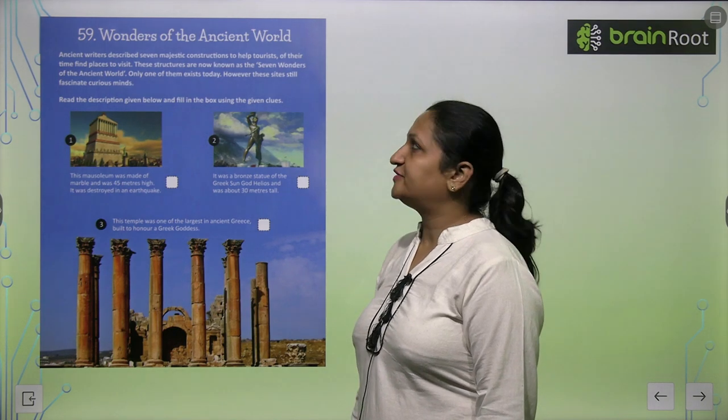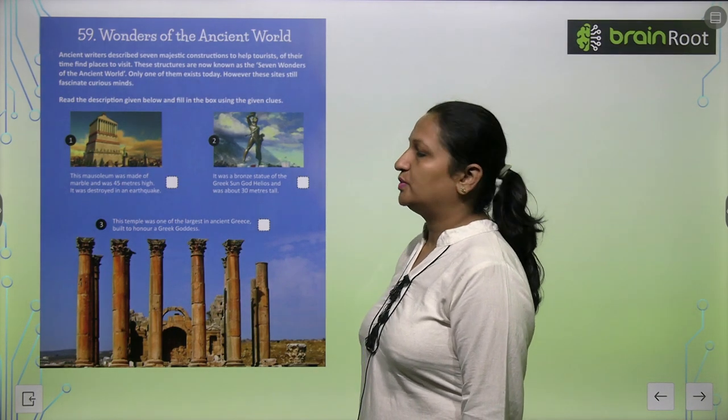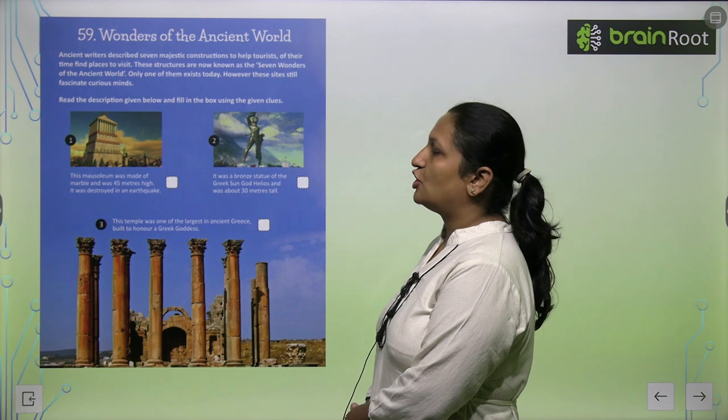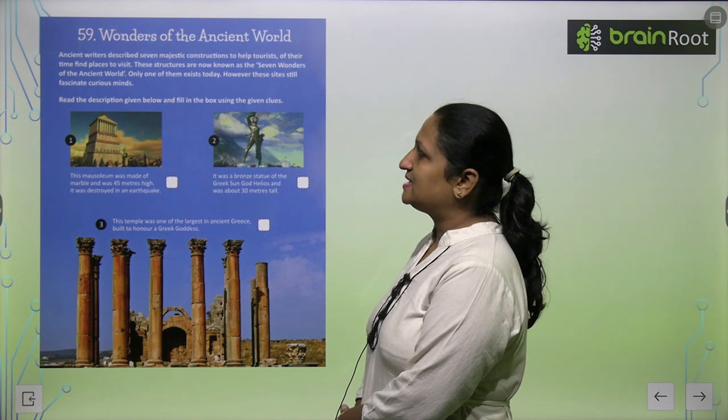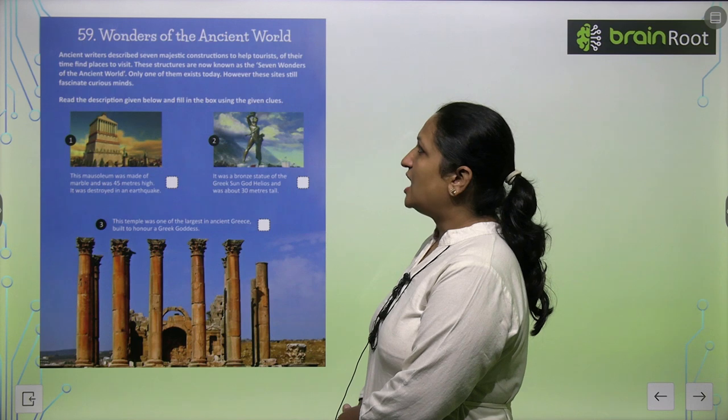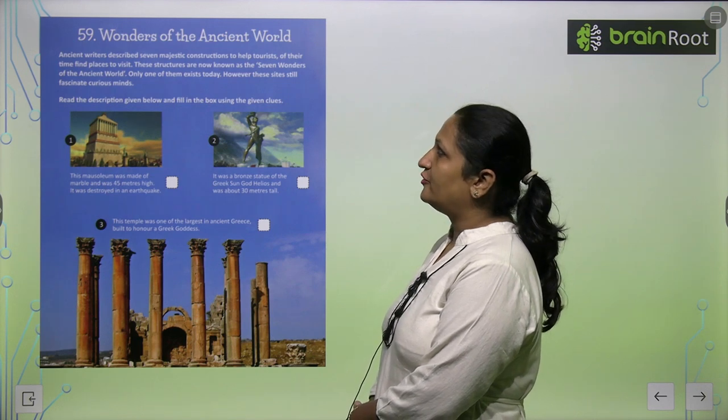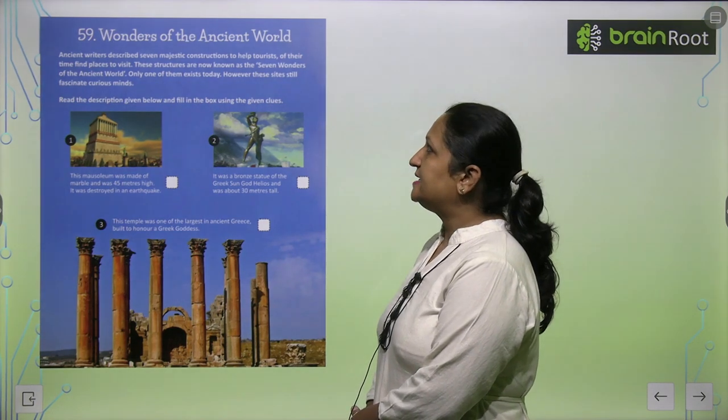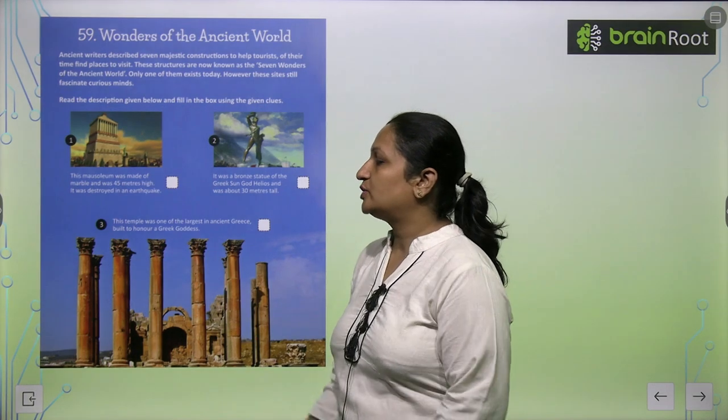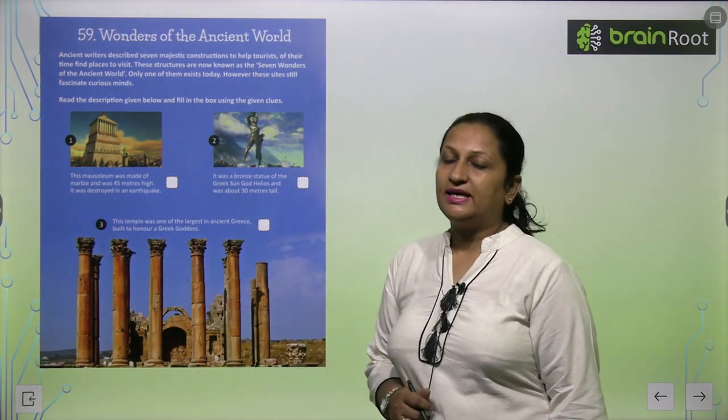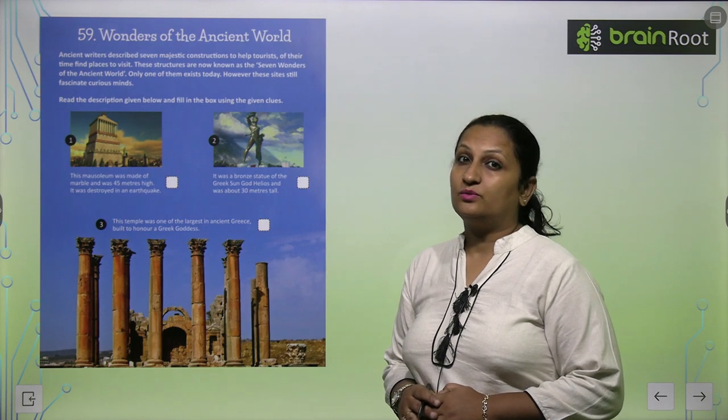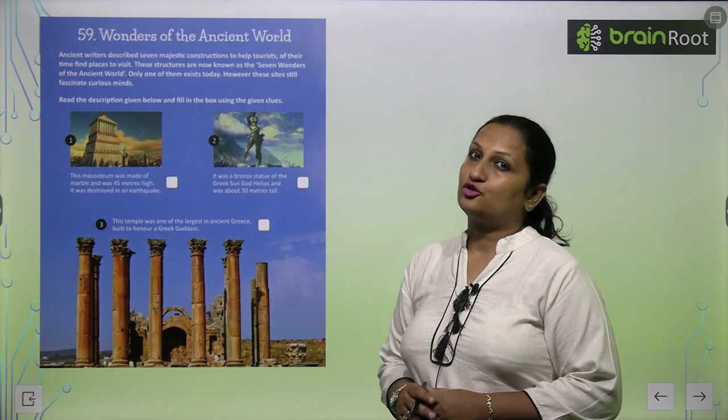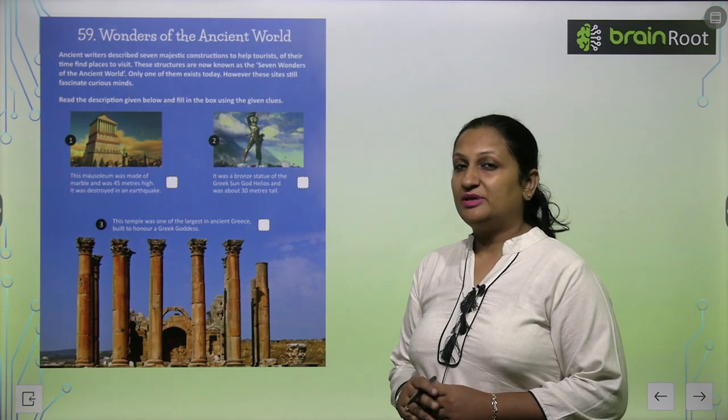Children, let's begin with chapter number 59, Wonders of the Ancient World. Ancient writers described seven majestic constructions to help tourists of the time find places to visit. These structures are now known as the Seven Wonders of the Ancient World. Only one of them exists today. However, these sites still fascinate curious minds. The structures were included in the Seven Wonders of the Ancient World, but most are destroyed. Only one is intact.